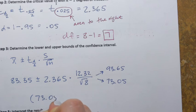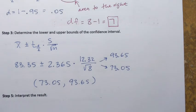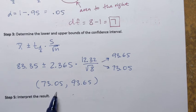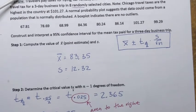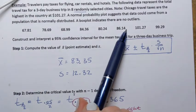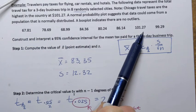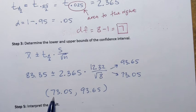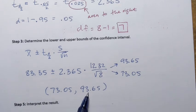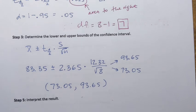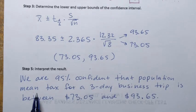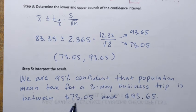The interval is (73.05, 93.65). These values are in dollars — they represent total travel taxes for a three-day business trip. We can interpret this as: we are 95% confident that the population mean tax for a three-day business trip in the United States is between $73.05 and $93.65.